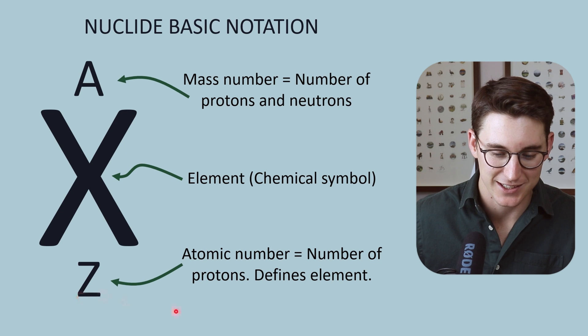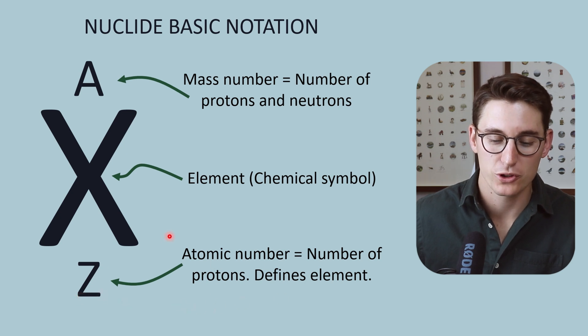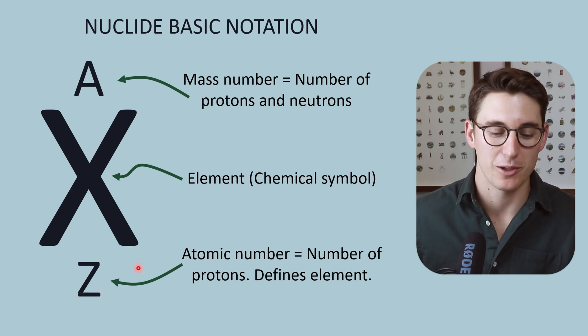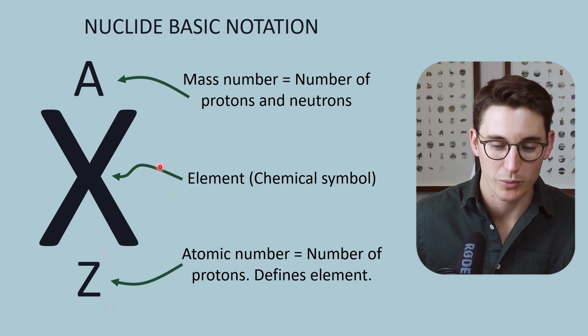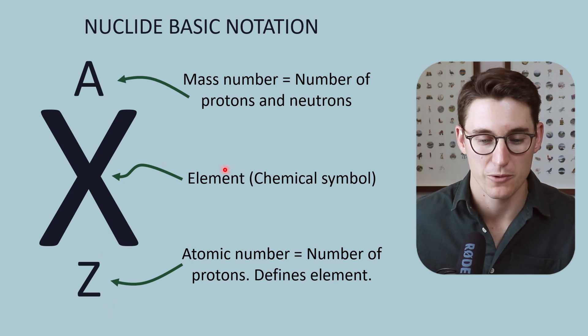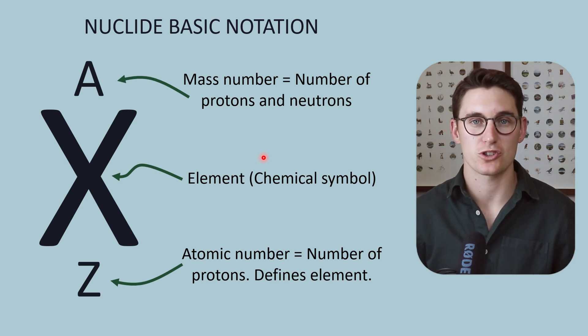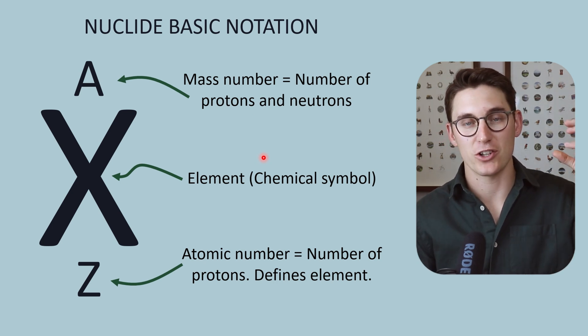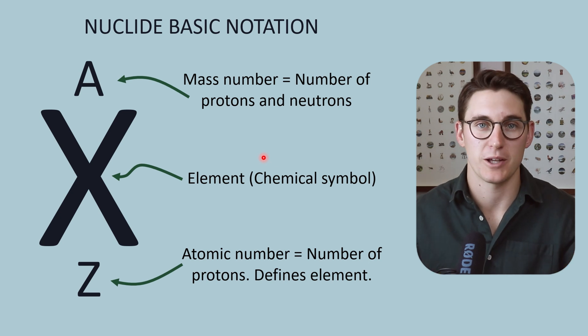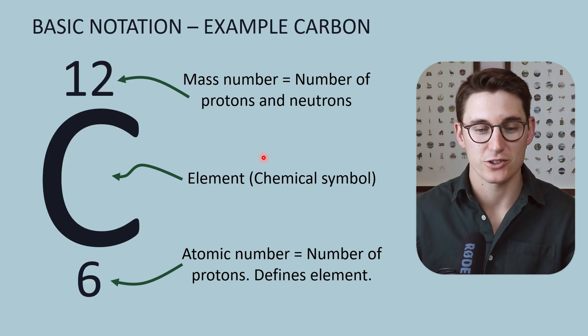We denote it by the letter Z here. The number of protons will determine the chemical element, so for every atomic number, we will have a specific chemical symbol. The mass number is the number of protons and neutrons combined. It's an integer, a whole number—we add the total number of protons to the total number of neutrons.